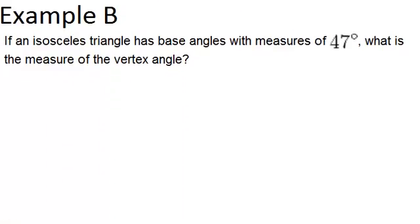Let's go to example B. If an isosceles triangle has base angles with measures of 47 degrees, what is the measure of the vertex angle? The base angles are the angles that are across from the congruent sides.